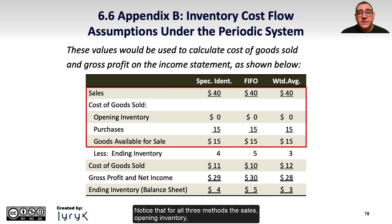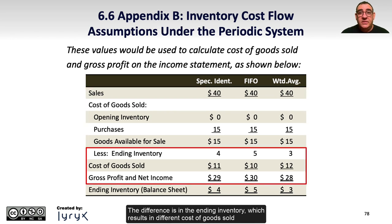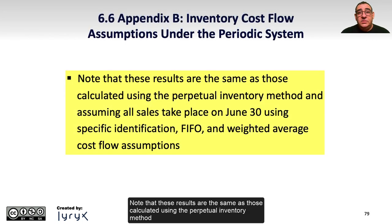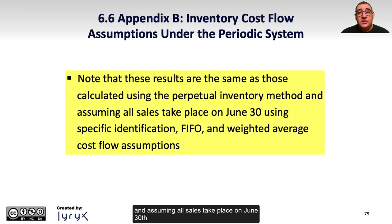Notice that for all three methods, the sales, opening inventory, purchases, and goods available for sale amounts are exactly the same. The difference is in the ending inventory, which results in different cost of goods sold and different gross profits, and ultimately a different contribution to net income. Note that these results are the same as those calculated using the perpetual inventory method, assuming all sales take place on June 30th, using specific identification, FIFO, and weighted average cost flow assumptions.